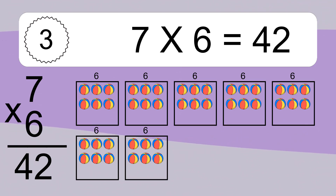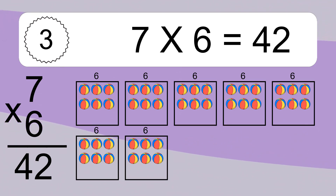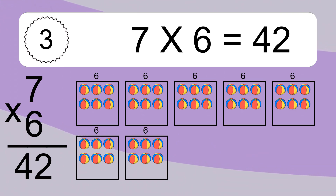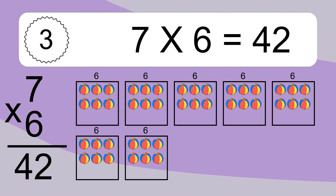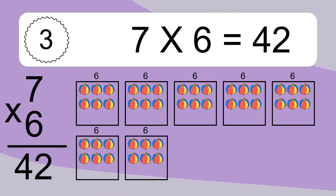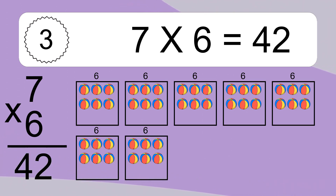We have 7 boxes, and each box has 6 colorful balls inside. If you count all the boxes together, you will have 7 times 6 balls. This equals 42 balls.